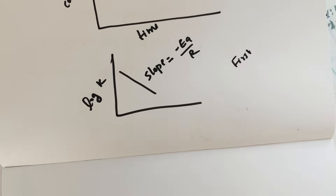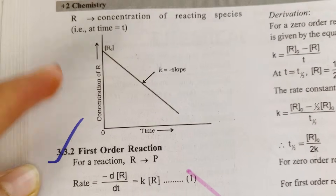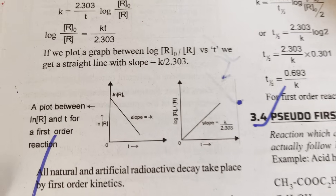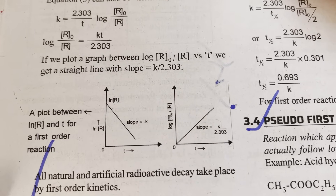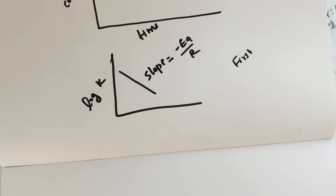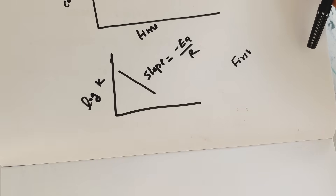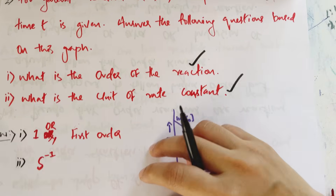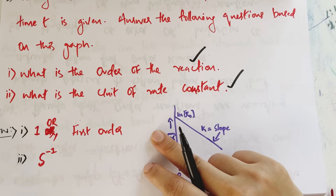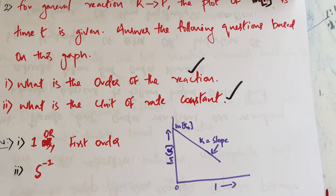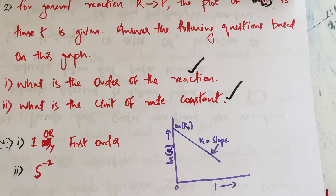Now let's look at the textbook. Concentration versus time gives zero order. Log concentration versus time gives first order. This is chemical kinetics. What is the unit of rate constant for the first order reaction? The unit is S raised to minus 1.